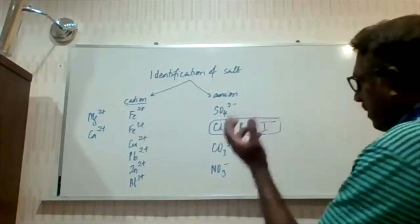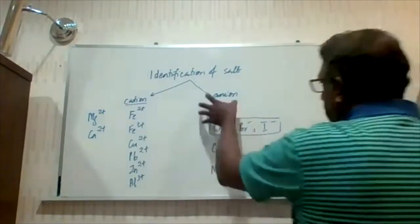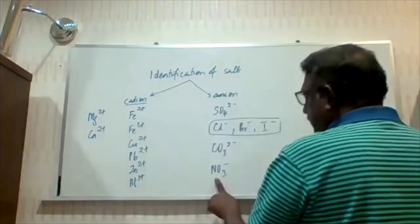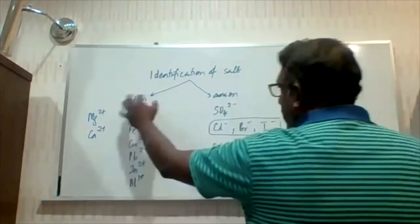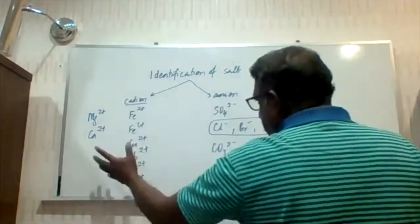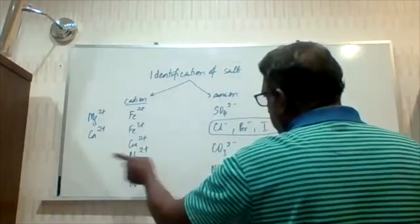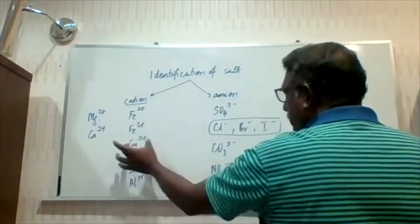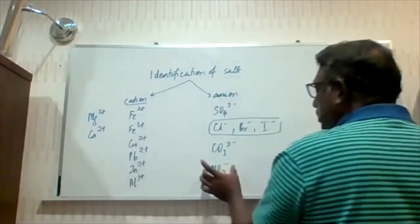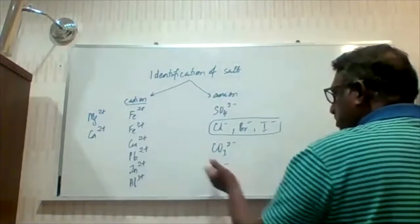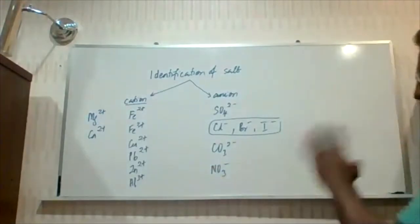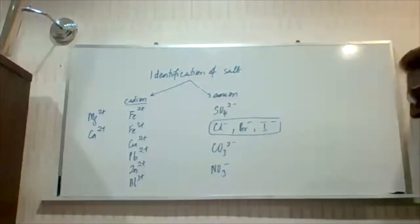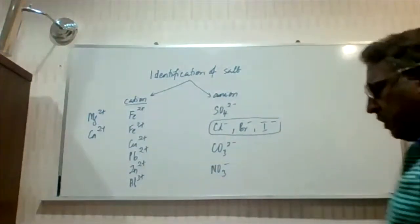So if you have identified your anion — let's say it happens to be a nitrate — and if you have identified your cation — let's say it happens to be copper-2 — therefore your salt will be copper-2 nitrate. You just fuse them together. That's the concept of identification of salt.